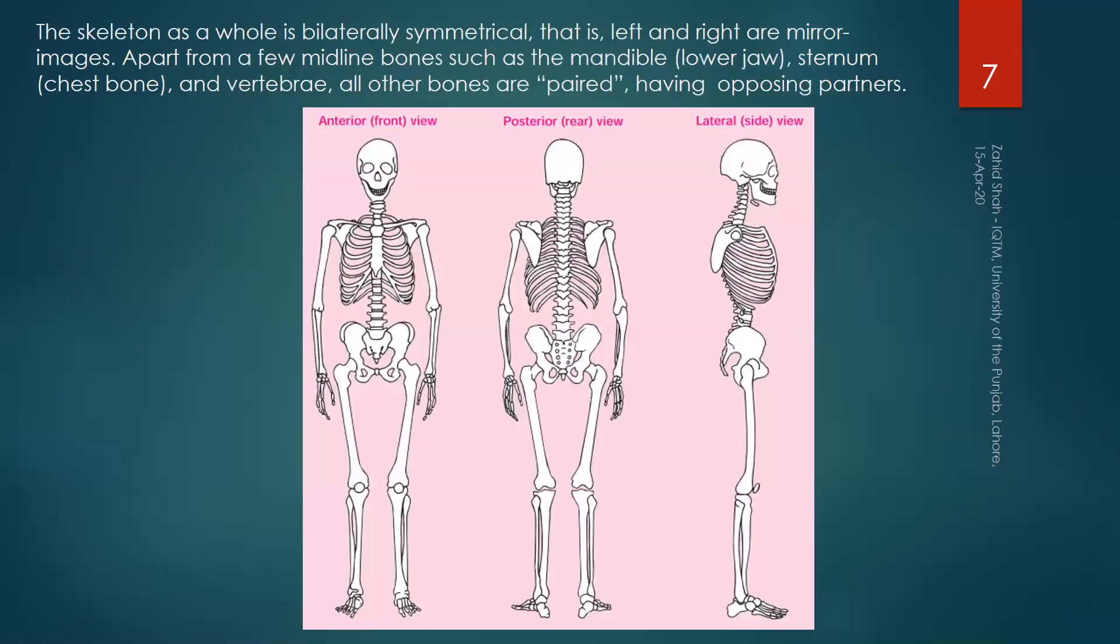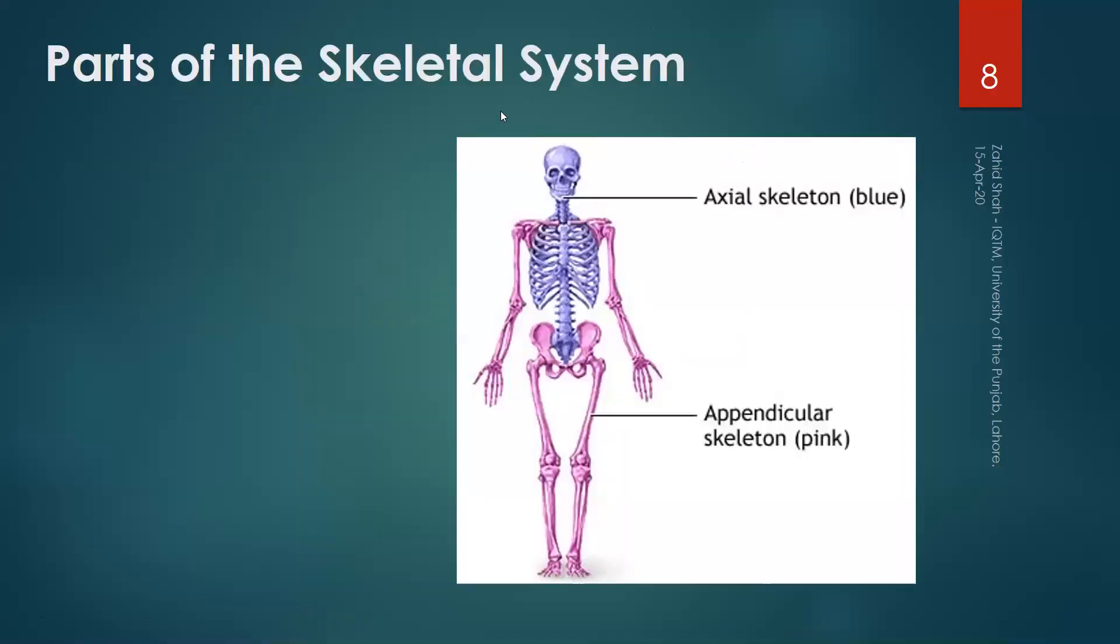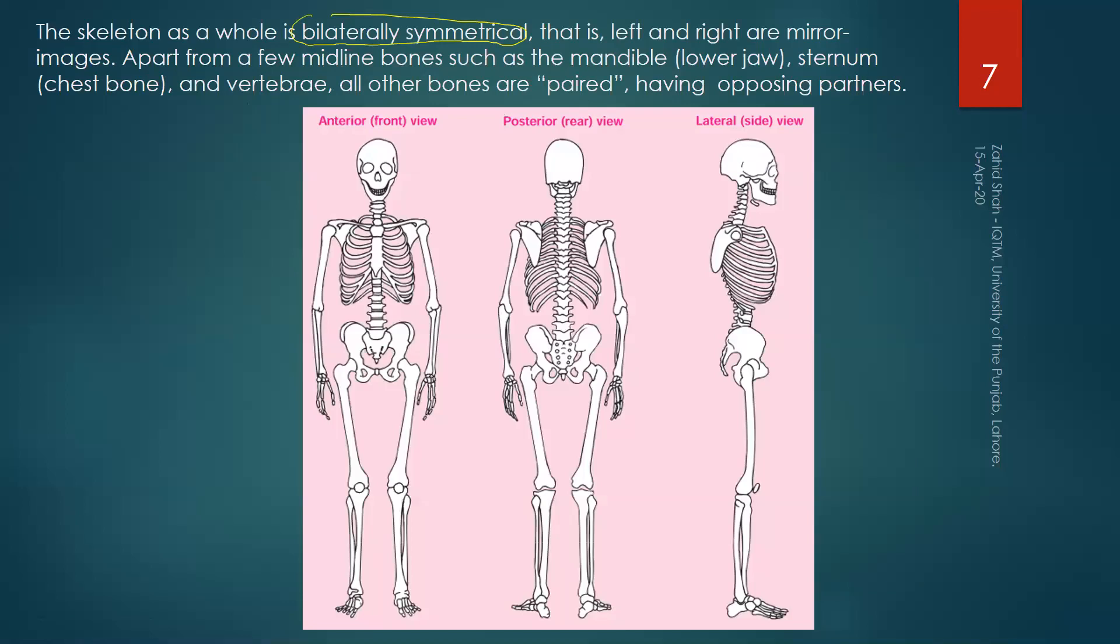The human skeletal system is very beautiful, and one of its beauties is that it is bilaterally symmetrical. That is, left and right are mirror images. Apart from a few middle bones such as the mandible, sternum, and vertebrae, all other bones are paired. As a whole, the human skeleton is symmetrical.